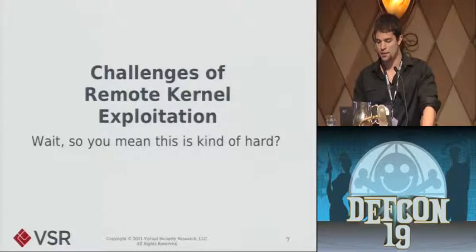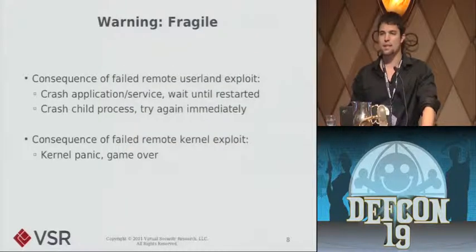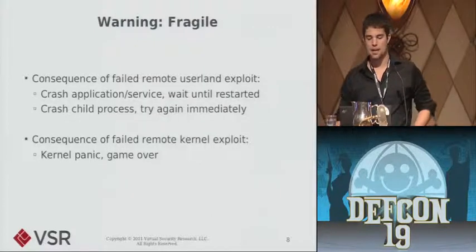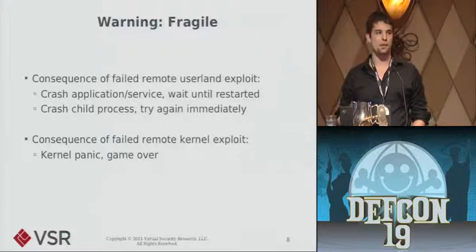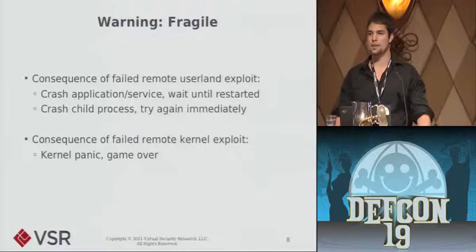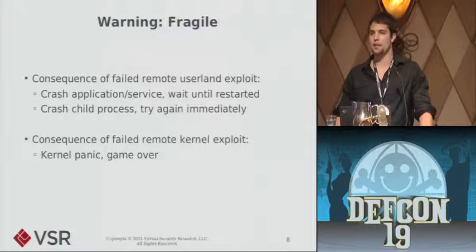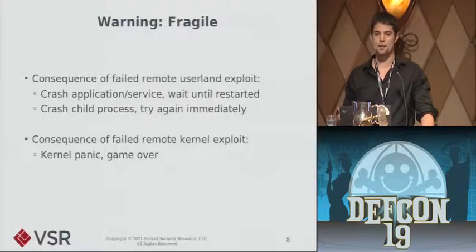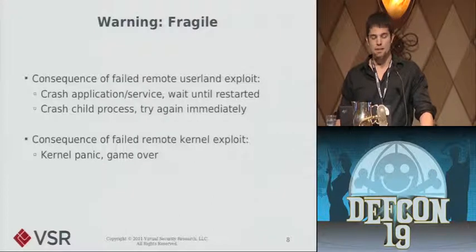Despite their advantages, remote kernel exploits are not trivial to write. I've identified three key challenges. The first is that the environment is incredibly fragile. With a remote user-land exploit for a web server or FTP server, if you fail on a memory corruption vulnerability and miscalculate offsets, you'll typically crash the application or service. Some need manual restart, others restart automatically. If the service forks child processes per connection, you may not even crash the service itself — just the child process — so you have minimal consequences for failure and can keep trying.